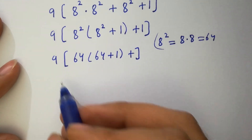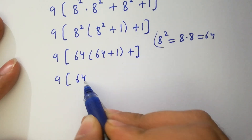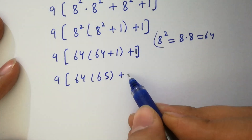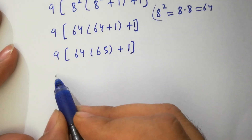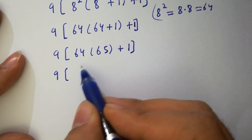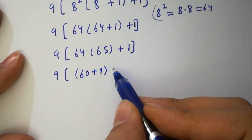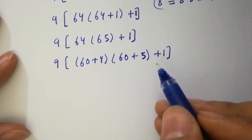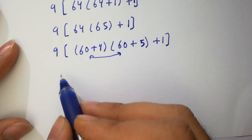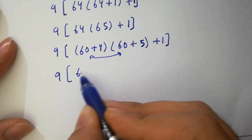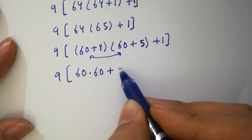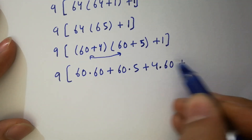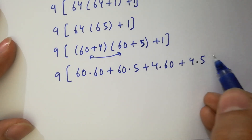I hope you understood. And here we have 9 times 64 times (64 plus 1 is 65), plus 1 plus 1. In the next step, 9 times (60 plus 4) times (65, which is 60 plus 5), plus 1. We can multiply both: 9 times (60 times 60, plus 60 times 5, plus 4 times 60, plus 4 times 5), plus 1.